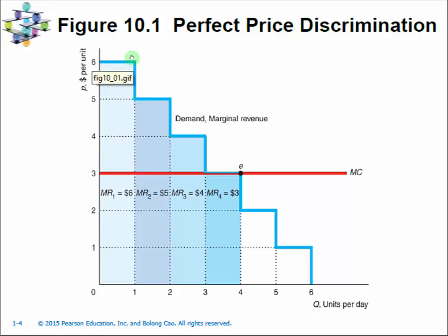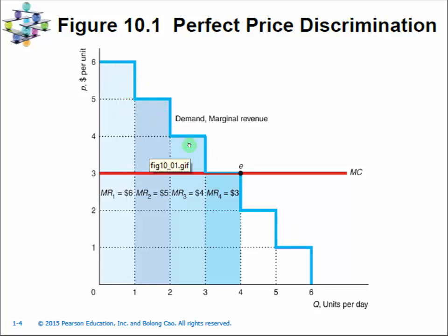Another way to think about this: assume the demand curve is for one customer, and for each unit we know the marginal reservation price — the reservation price the customer would pay for the next unit. Basically, the firm knows the complete demand curve information for this customer.